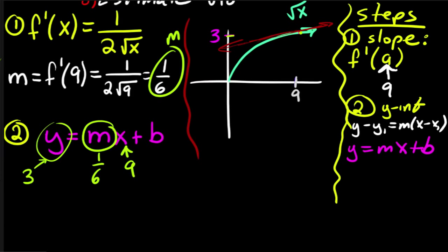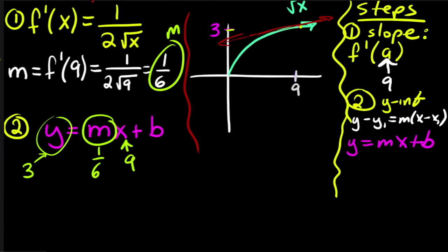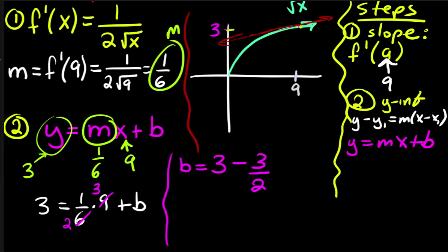Okay, so we've got that, so then what I have is 3 is equal to 1 sixth times 9 plus b, now 1 sixth times 9, well I can just simplify into 3 over 2, so 3 halves. So then what I have is that b is equal to 3, and then if I move that 3 halves over, minus 3 halves. So that means that b is going to have to equal 3 halves itself.